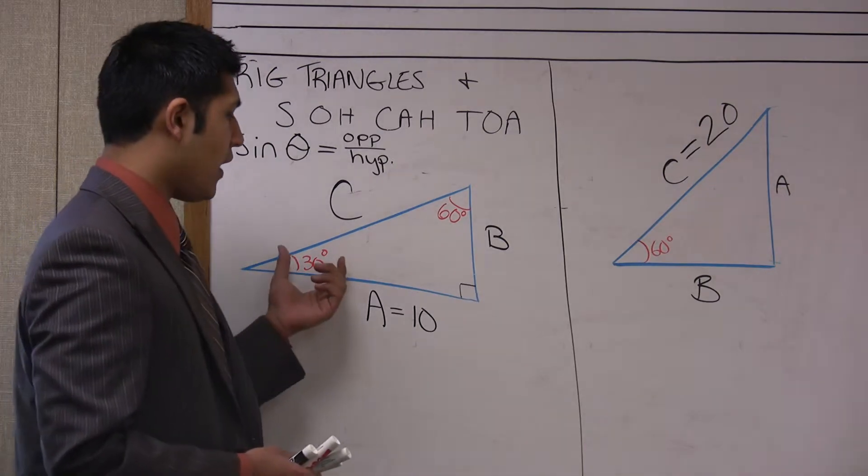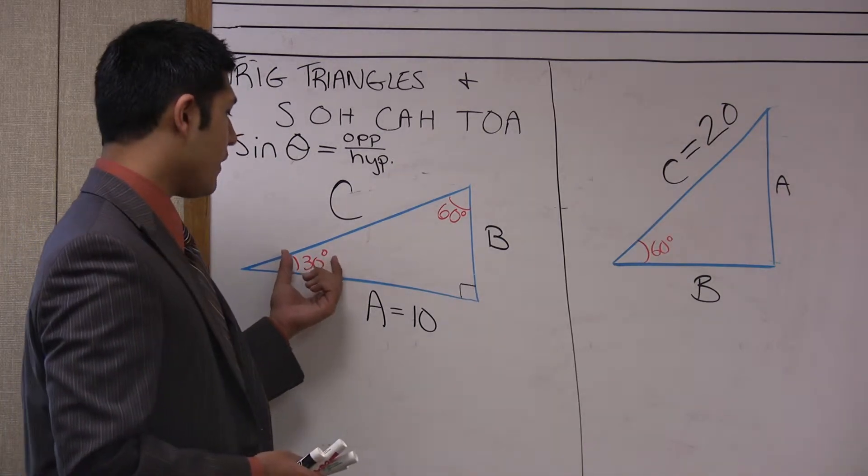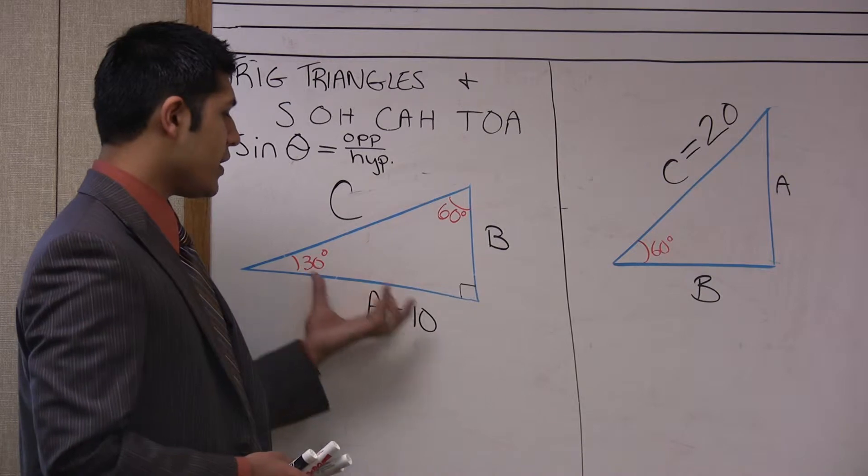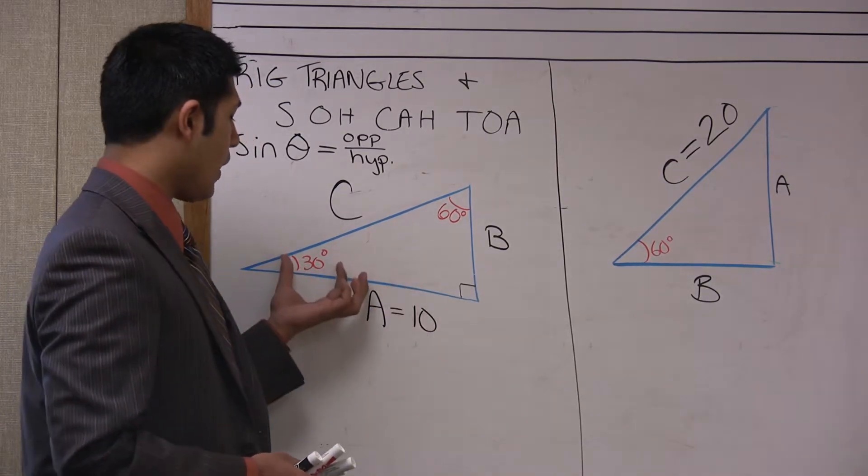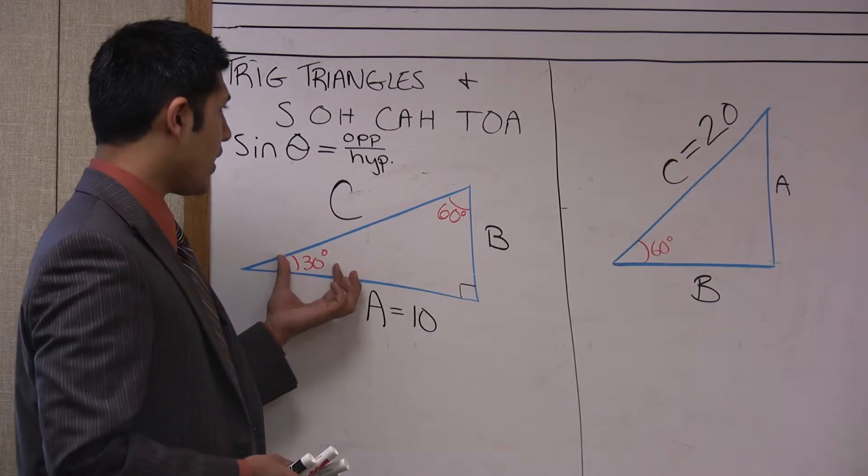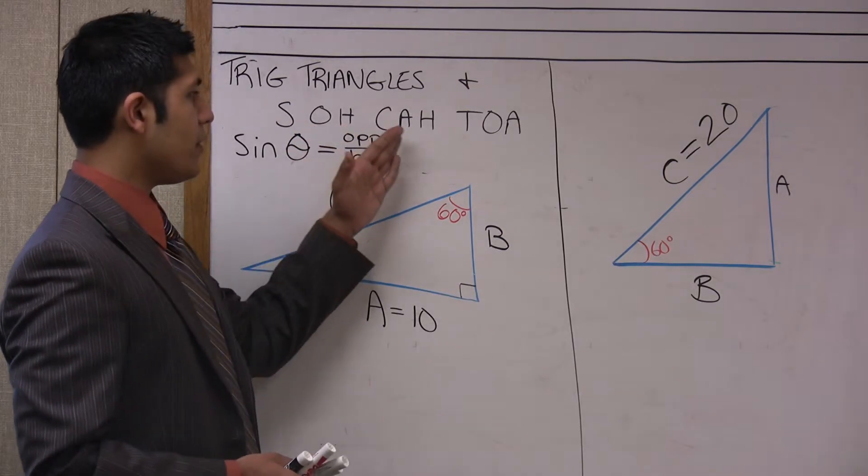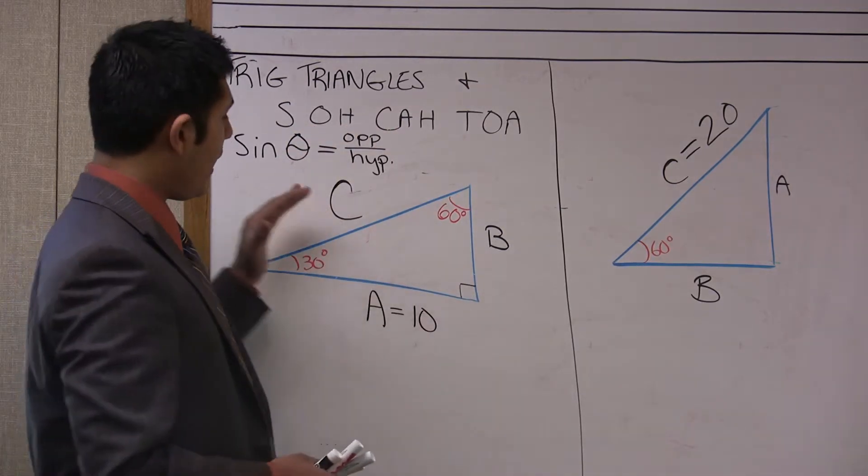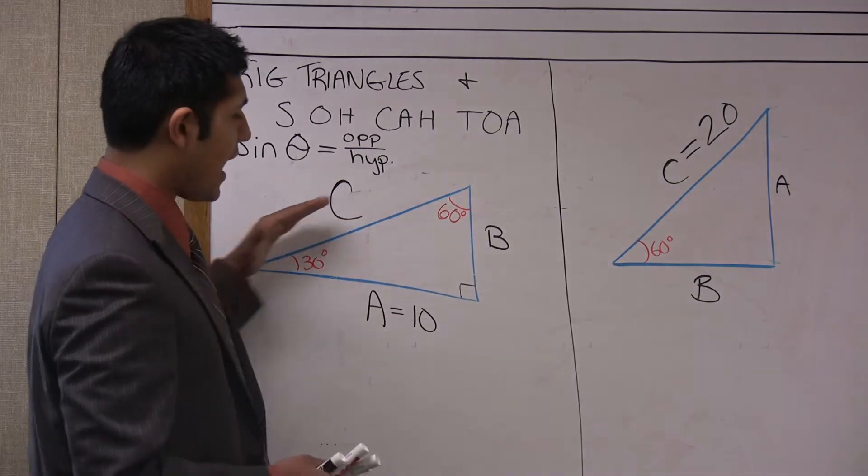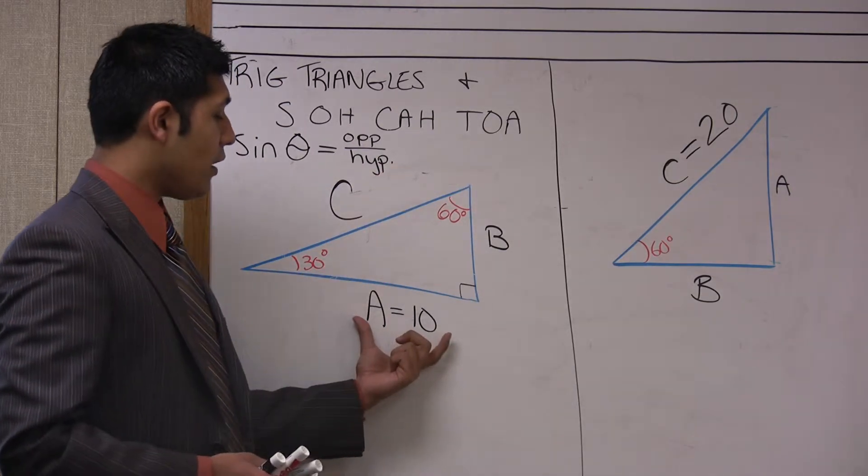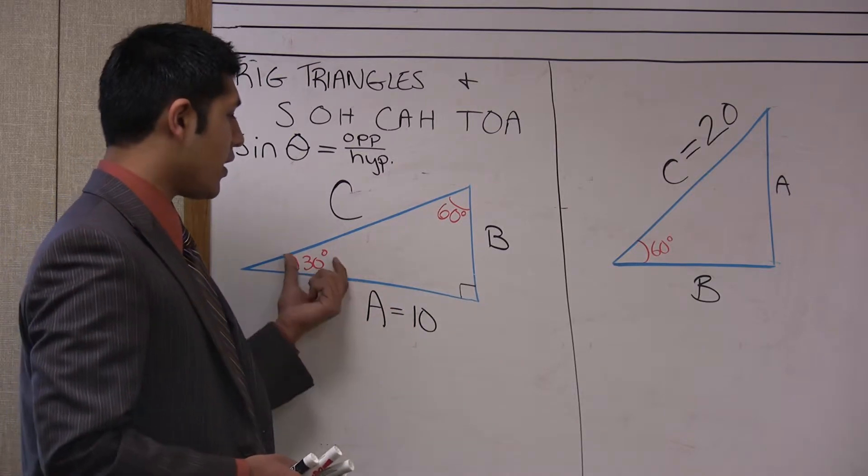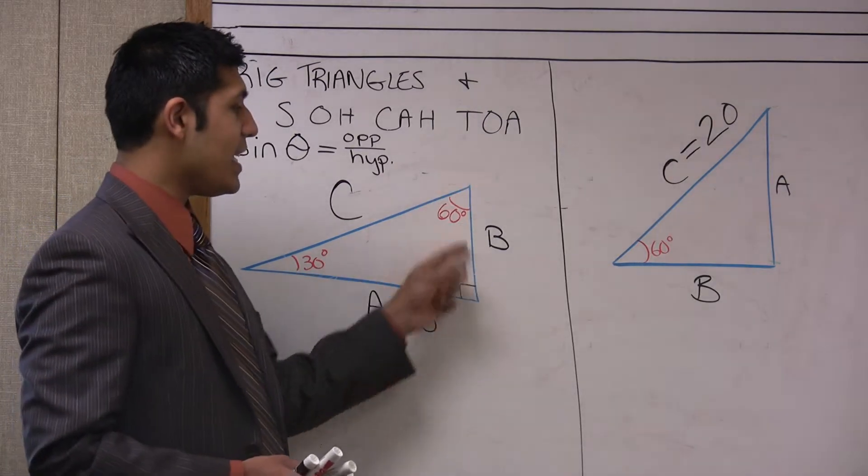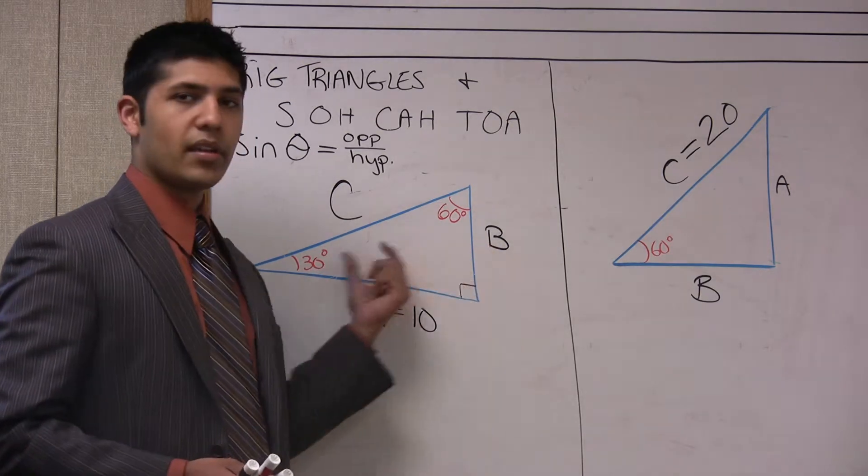The first thing I like to do is say, well we have an angle and what is the relationship to what's given to us and that angle? The terminology here is opposite, hypotenuse, or adjacent. The hypotenuse is always the longest side, so this side is going to be adjacent to the 30 degree angle and side B here is going to be opposite to the 30 degree angle.